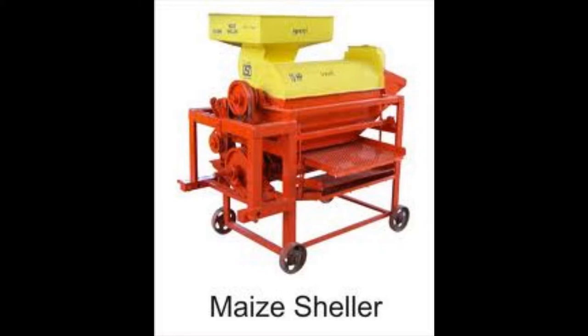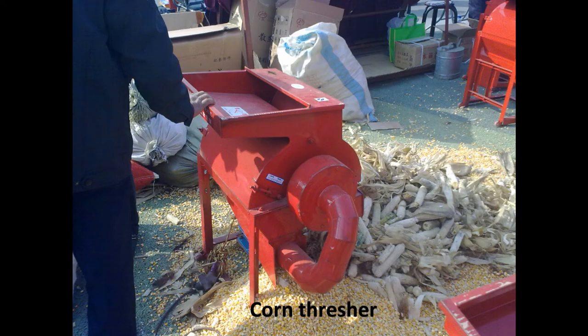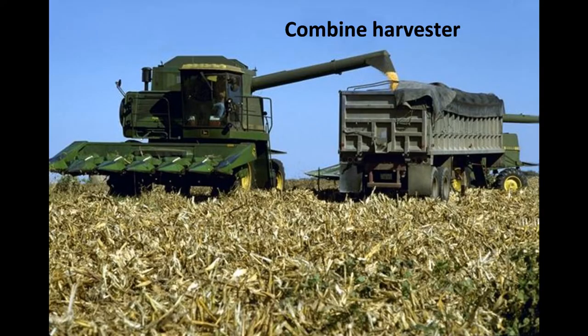Maize sheller: this is a machine used to remove the corn's outer shell. Corn thresher: it can separate the corn kernels from the cob without breaking the corn crop. Combined harvester: it is a machine that harvests grain crops and also performs threshing, reaping, and winnowing.